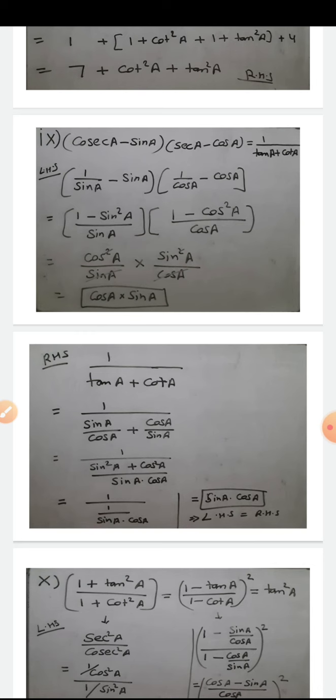Part 9: prove (cosec A - sin A)(sec A - cos A) = 1/(tan A + cot A). Taking the left hand side: cosec A = 1/sin A and sec A = 1/cos A. So LHS = (1/sin A - sin A)(1/cos A - cos A). Taking LCM in each bracket: first bracket = (1 - sin²A)/sin A, second bracket = (1 - cos²A)/cos A. Then 1 - sin²A = cos²A and 1 - cos²A = sin²A.